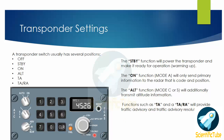Here you have TA only and TA/RA. Functions such as TA and TA/RA will provide traffic advisory and traffic advisory with resolution. For example, if two aircraft are getting closer to each other and there is a conflict, when the system detects the conflicting path, if TA only is selected, something like this will sound in the cockpit: 'Traffic, traffic.' If TA/RA is selected, a resolution advisory will also be provided, sounding something like: 'Climb, climb,' or 'Descend, descend,' or 'Adjust vertical speed, adjust,' or 'Maintain vertical speed, maintain.'